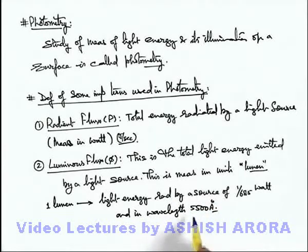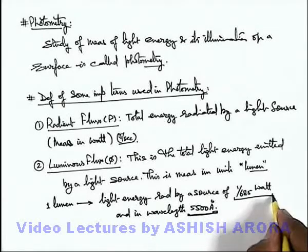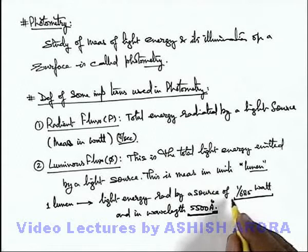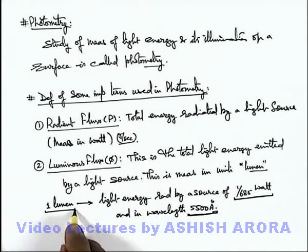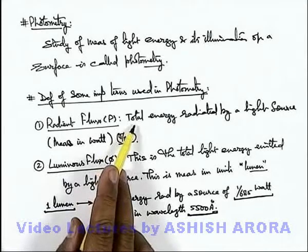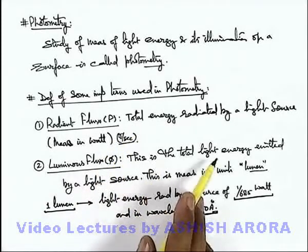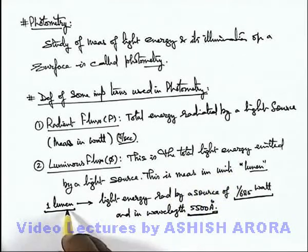That means if there is a monochromatic source of wavelength 5500 angstrom which is having a total power of 1 by 685 watt, then the light energy emitted by this source we call 1 lumen. This is the definition of 1 lumen. Out of the total energy, whatever amount of light energy is emitted, that is in lumen.